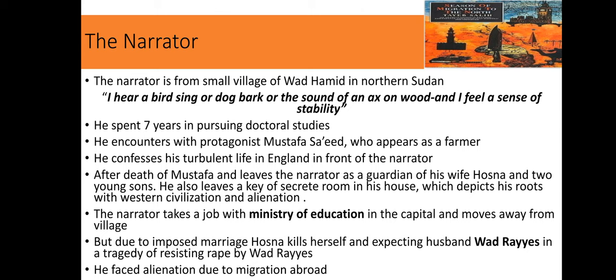One night Mustafa Saeed met with the narrator and told him about his dark past, moving us from the present to the past. Back in the present, the narrator living in the homeland heard news of Mustafa Saeed's death. Although Mustafa was a very good swimmer, his death was highly mysterious. After his death, Mustafa's wife Hosna bint Mahmoud and his two young sons came under the guardianship of the narrator. Mustafa also left him the key to a secret room in his house — a new twist in the novel.